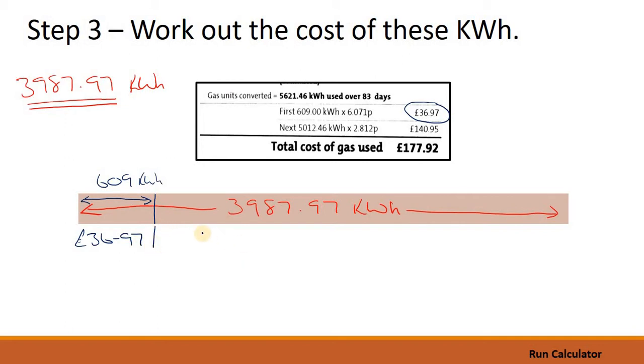And we know from the bill, because the pricing structure hasn't changed, that those first 609 kilowatt hours will cost us £36.97. That's brilliant. However, we've still got a chunk of kilowatt hours to pay for and what we've got to do is to work out how many kilowatt hours are in this chunk. Hopefully you're starting to see it. It's not too difficult.